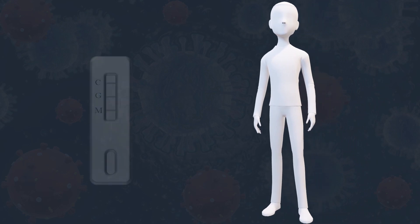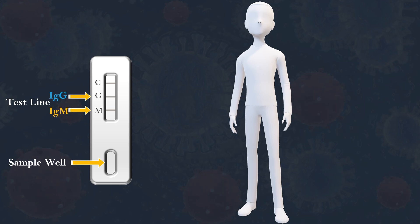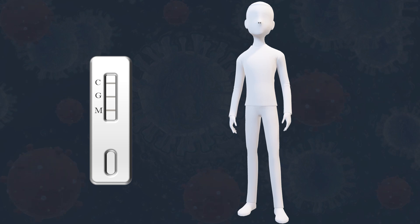The COVID-19 antibody test is used to detect the presence of the anti-SARS-CoV-2 IgM and IgG antibodies in human whole blood, serum, or plasma samples, by using a cassette-based system.